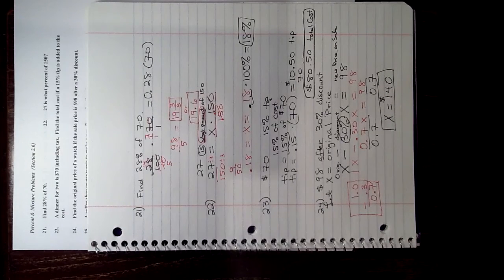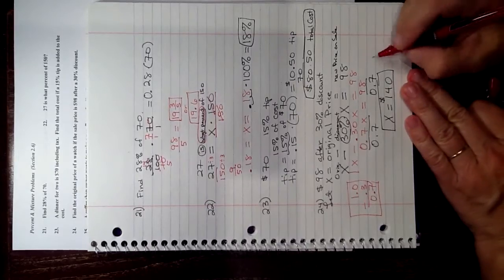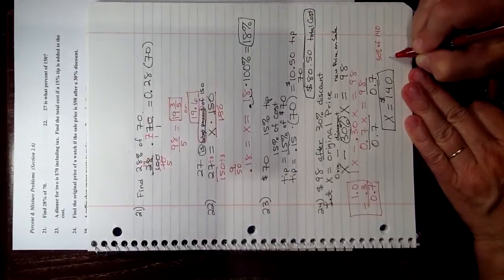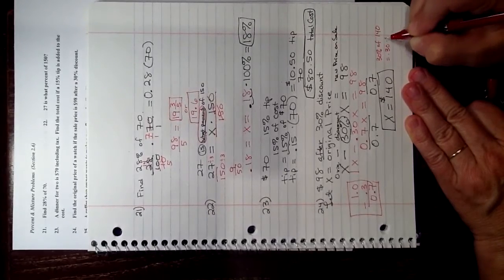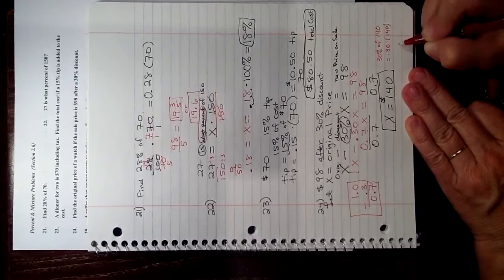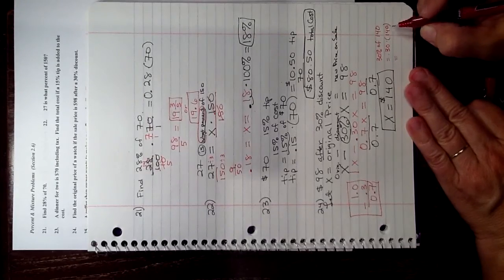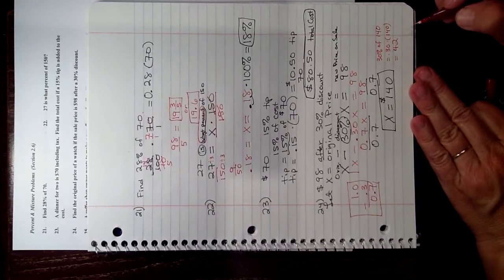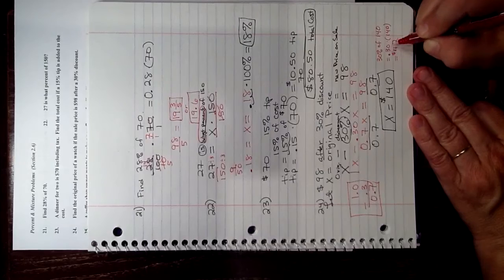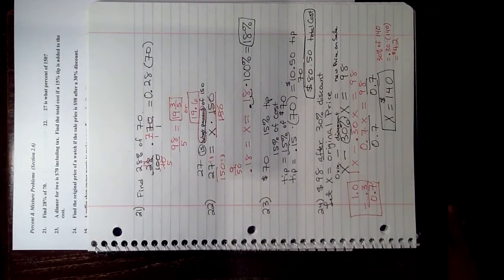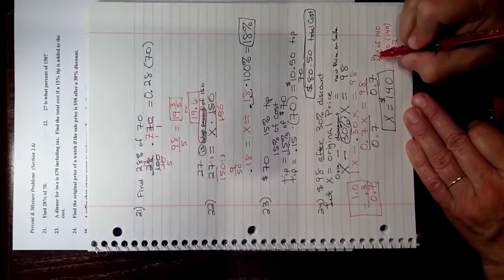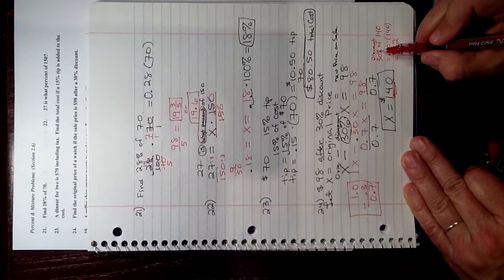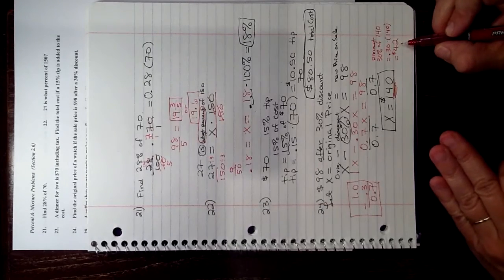And the way we could check it is we could take 30% of $140, which is 0.30 times 140, you could use your calculator, and you're going to get $42 when you multiply 0.30 times 140, you get 42, and that's your discount. So if you start with an original price of $140, 30% of $140 is discounted, $42.